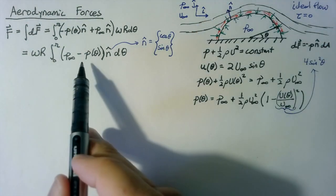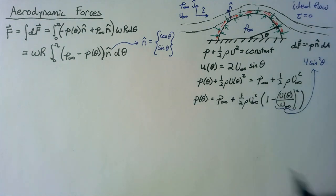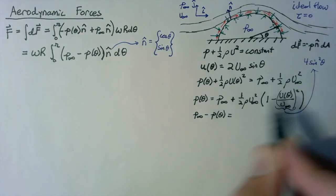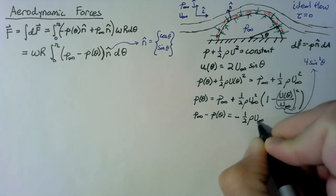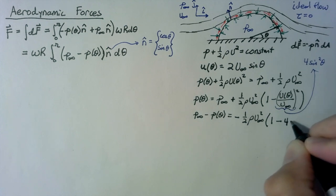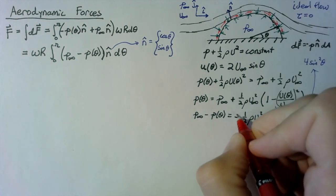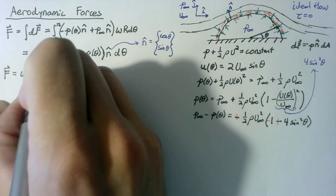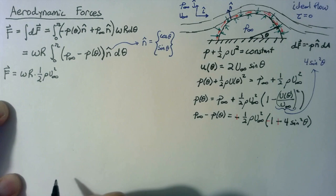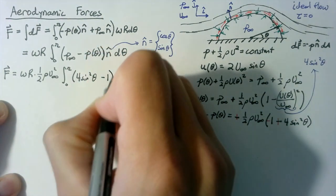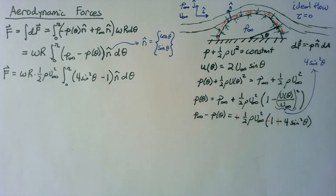Substituting p∞ minus p(θ) into the expression, we get negative one-half rho U∞² times (1 minus 4 sin²θ). Distributing the negative sign, we end up with w times r times one-half rho U∞² multiplied by the integral from 0 to pi of (4 sin²θ minus 1) times n̂ dθ. That's the total force in vector form, but we want to separate it into lift and drag.